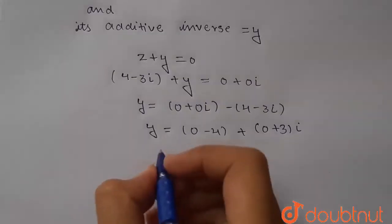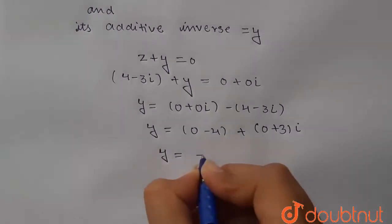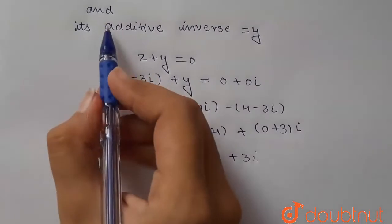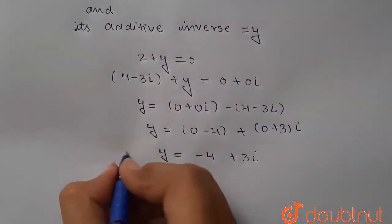So from here what we are getting: y will be - this will be minus 4 and this will be plus 3i. And y was what? It was the additive inverse which was asked in the question.